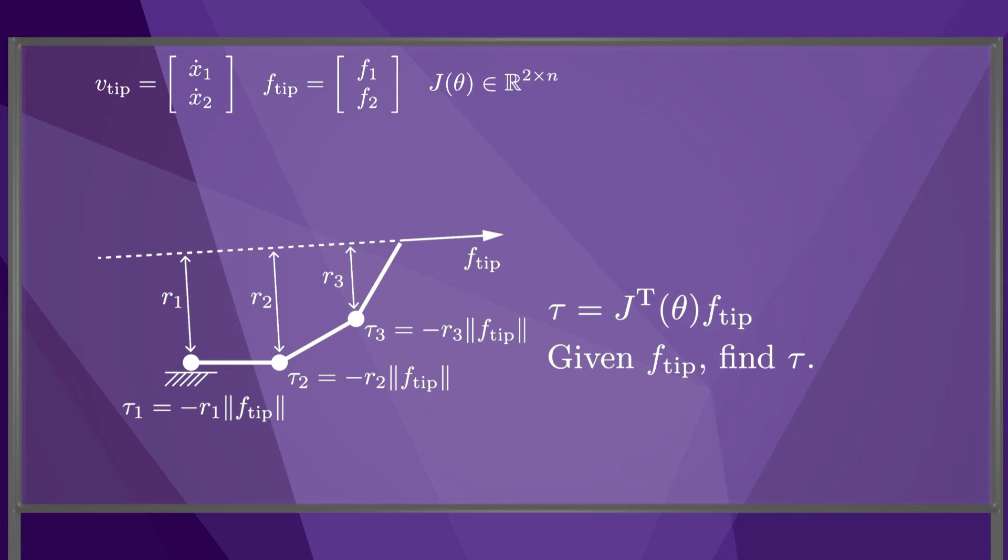Each joint has to individually support the end-point force f-tip. You could also imagine asking the inverse question. Given tau, what is the end-point force f-tip? But this question is not as straightforward, because the inverse of j transpose may not exist. For the 3R arm, for most random choices of joint torques, the arm will have internal motion and will not simply statically resist an externally applied force minus f-tip.